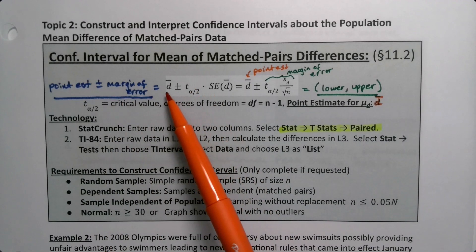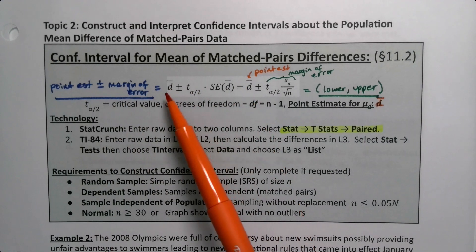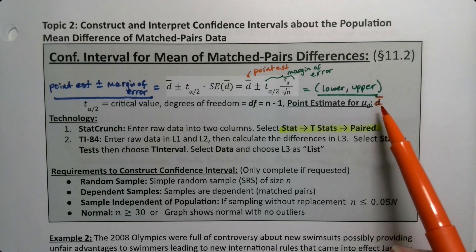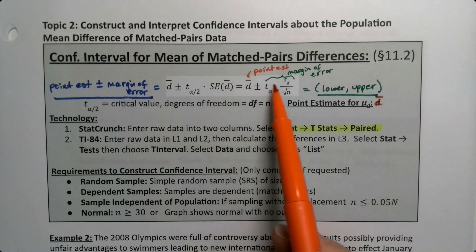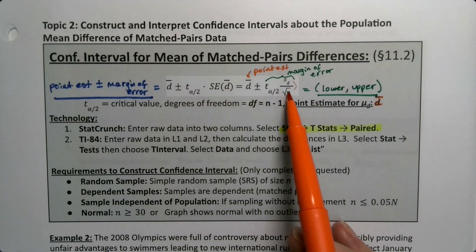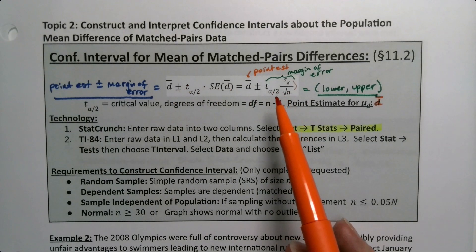When you look at these formulas you can see D-bar is the center, it's the point estimate, and you add and subtract the margin of error which is the whole back half of the formula. You can write it this way but we tend to write it this way more often.